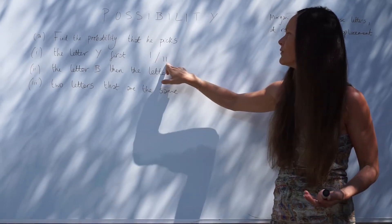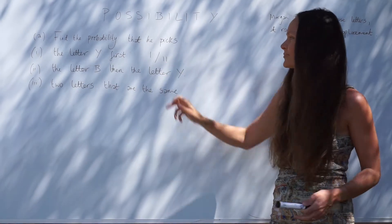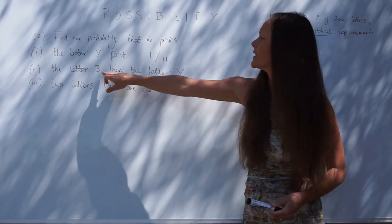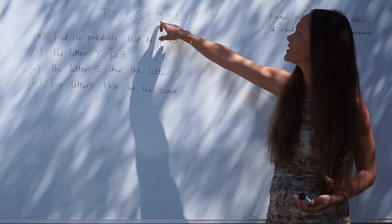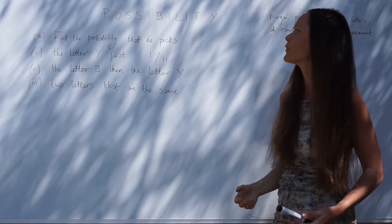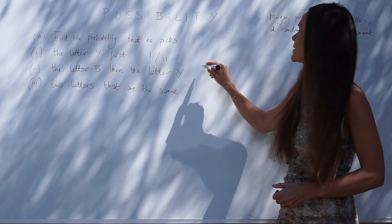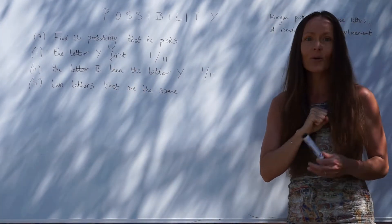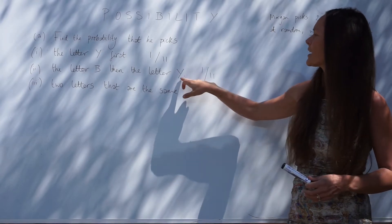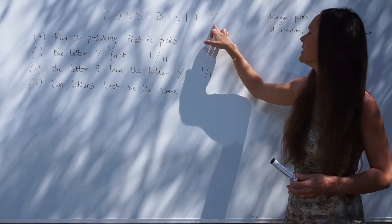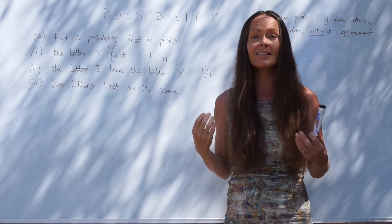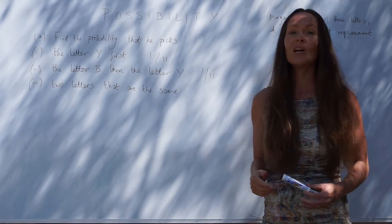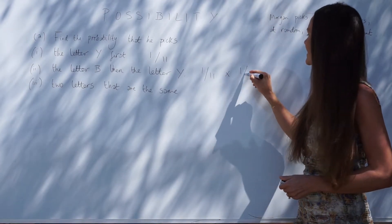For the next part — the letter B then the letter Y — well there's only one letter B, so the probability of taking a letter B first would be one out of 11. Remember it's without replacement, so now that letter B has been taken out of the pile. If we look at the letter Y, there's only one, but this time there aren't 11 cards altogether — there are 10 because we took out the letter B, so the probability of now taking the letter Y would be one tenth.